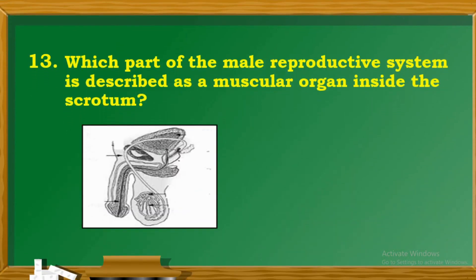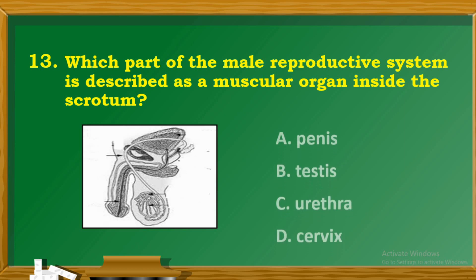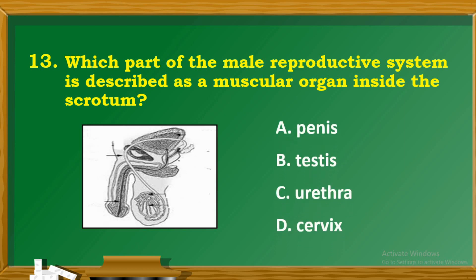Question 13: Which part of the male reproductive system is described as the muscular organ inside the scrotum? A. Penis. B. Testes. C. Urethra. D. Cervix.